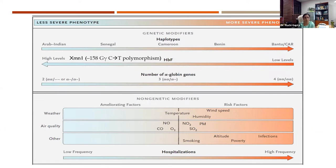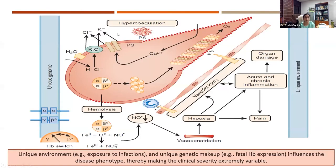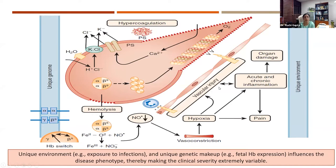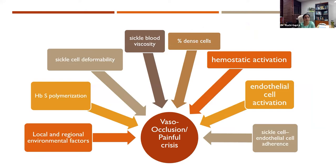These patients usually don't come to us as anemia workup but rather with complications from polymerization causing red cell deformation. There is flip-flop of the RBC membrane with exposure of phosphatidylserine on the outer side, leading to a procoagulant state. The cells adhere, there is hypoxia, decreased nitric oxide, and vasoconstriction. All this — combined with the unique genetic makeup — influences the disease phenotype and clinical severity. Patients present with vaso-occlusive crisis rather than persistent anemia.